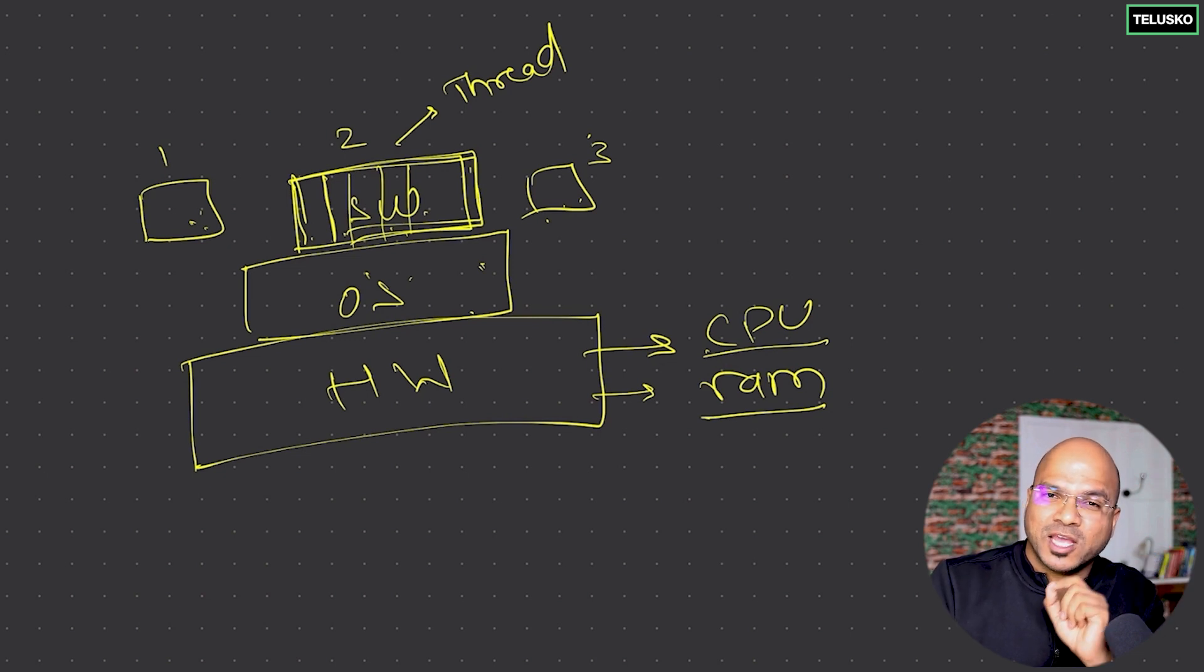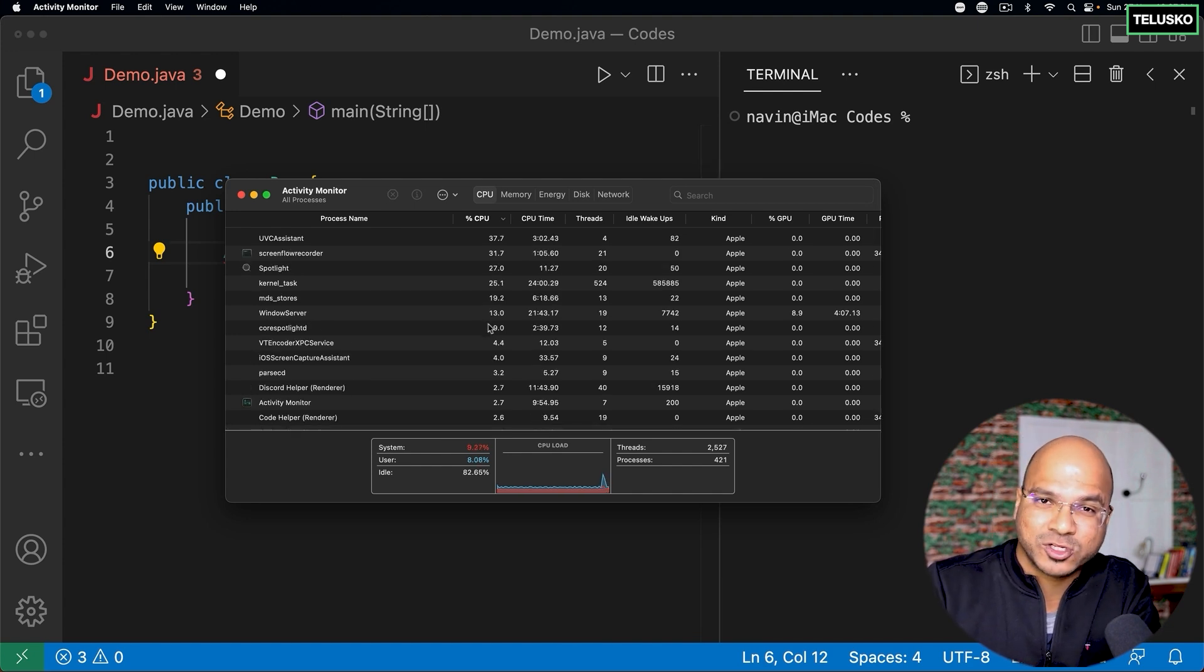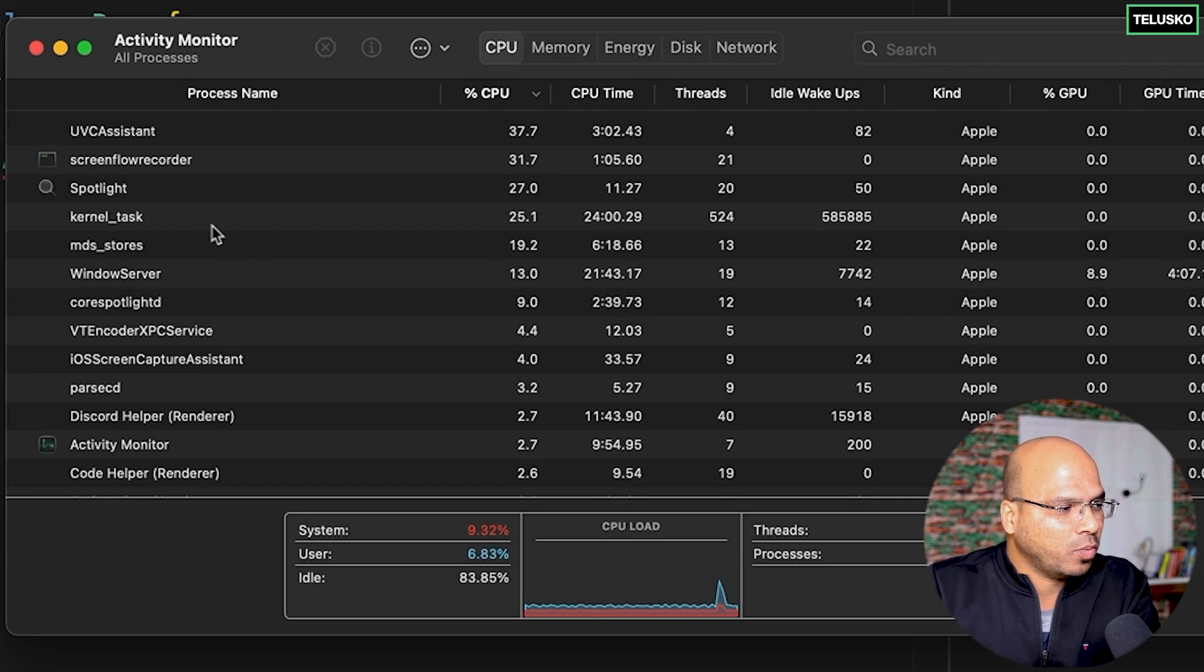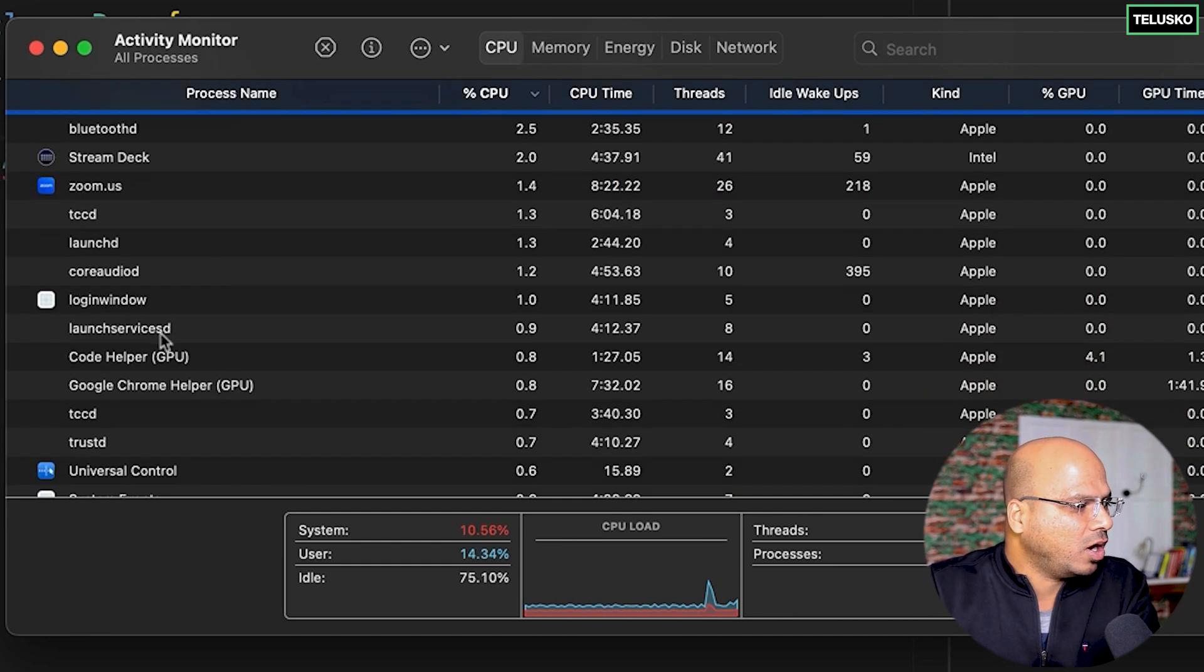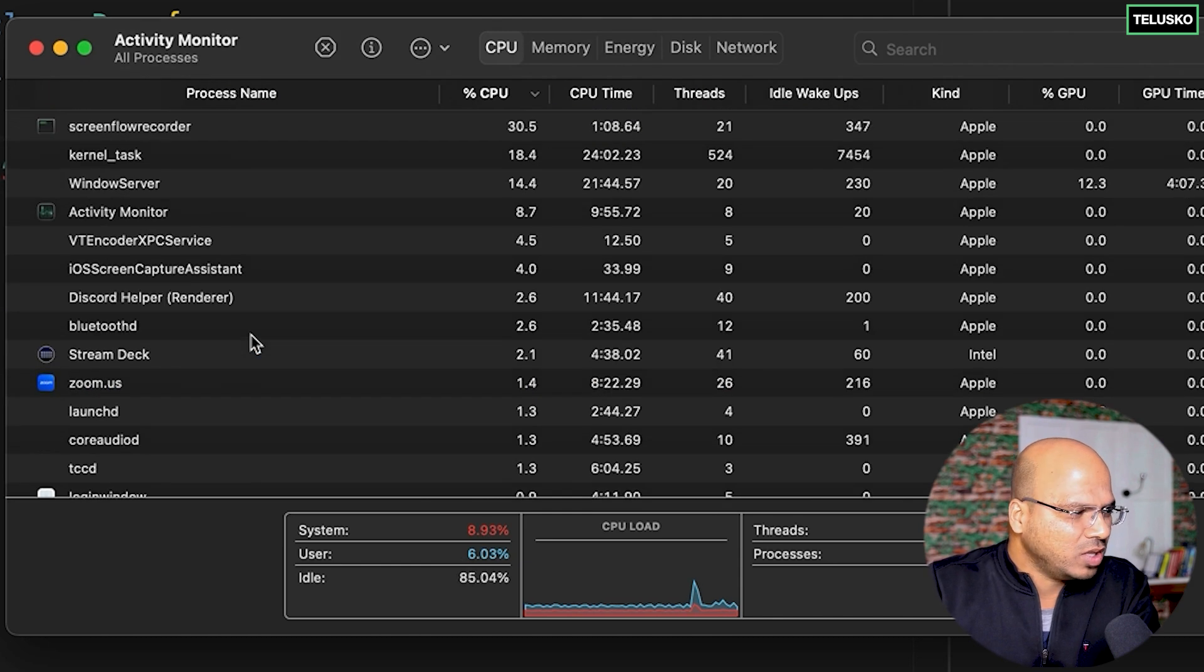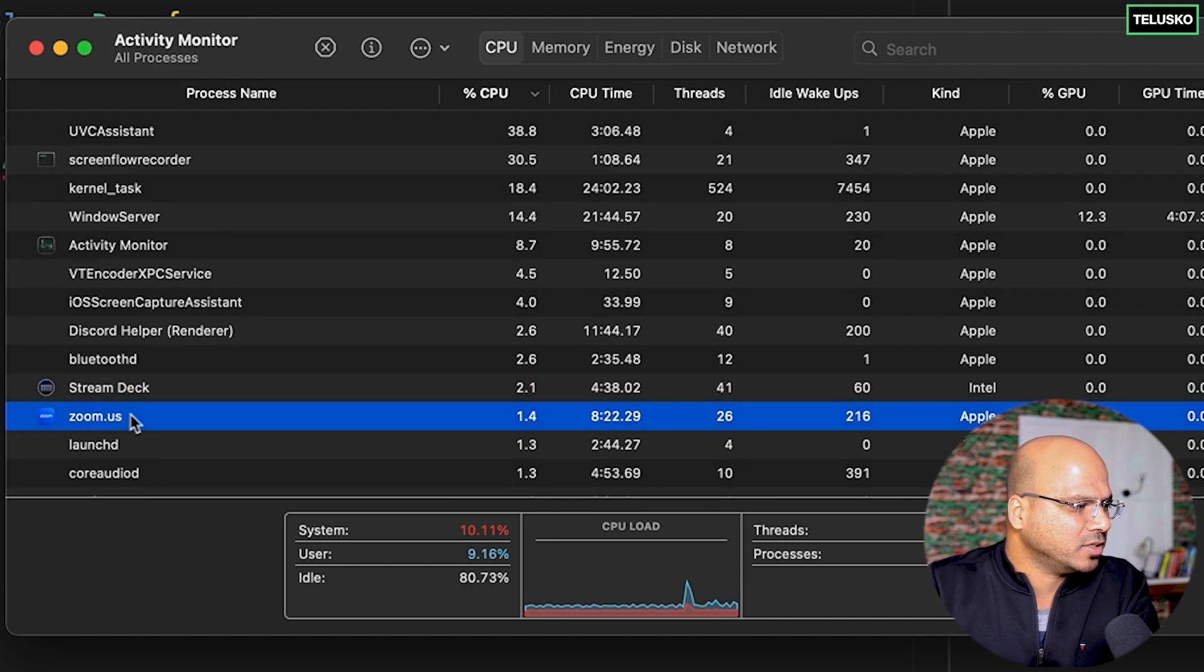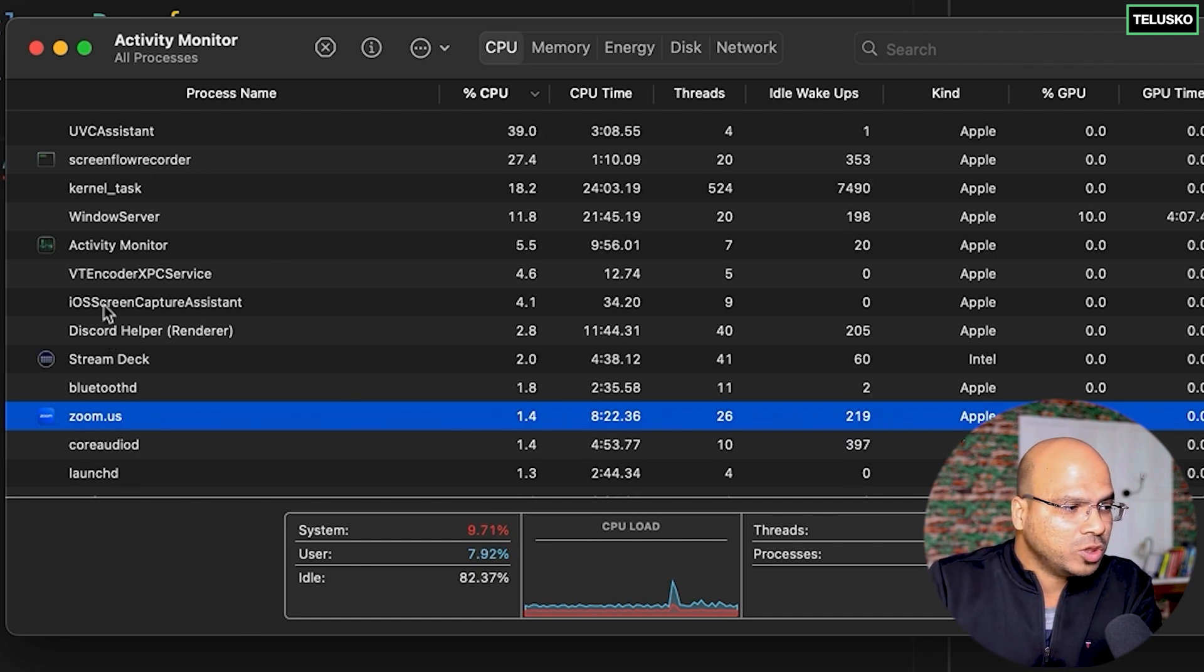That is possible with the help of multiple threads. In fact, if you see your Activity Monitor on Mac or if you go to Task Manager on Windows, you can see whatever task you have. I have a Discord helper here, login window, Code helper. So all these softwares are running—Stream Deck, Zoom OS, Zoom software, everything is running. All those are tasks.